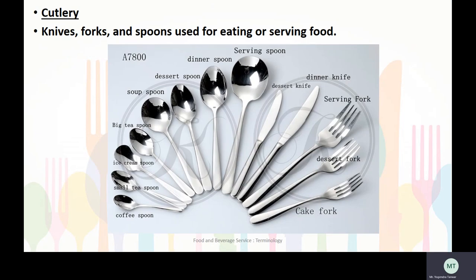The next terminology is cutlery. Cutleries refer to knives, forks, and spoons used for eating or serving food. Cutleries can be made of stainless steel or EPNS. EPNS stands for electroplated nickel silver.